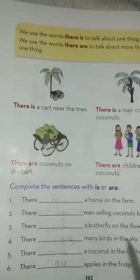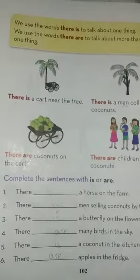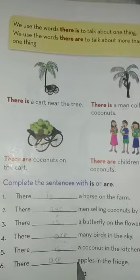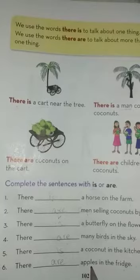Point five: 'There is a coconut in the kitchen.' Point six: 'There are apples in the fridge.' More than one apple, so we use 'are.'